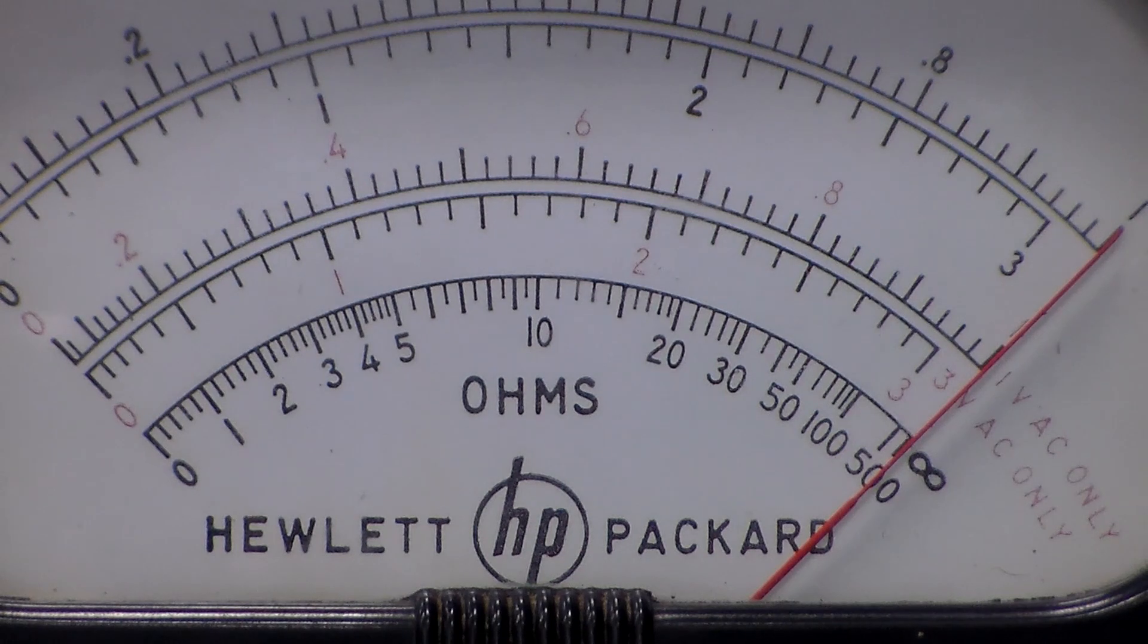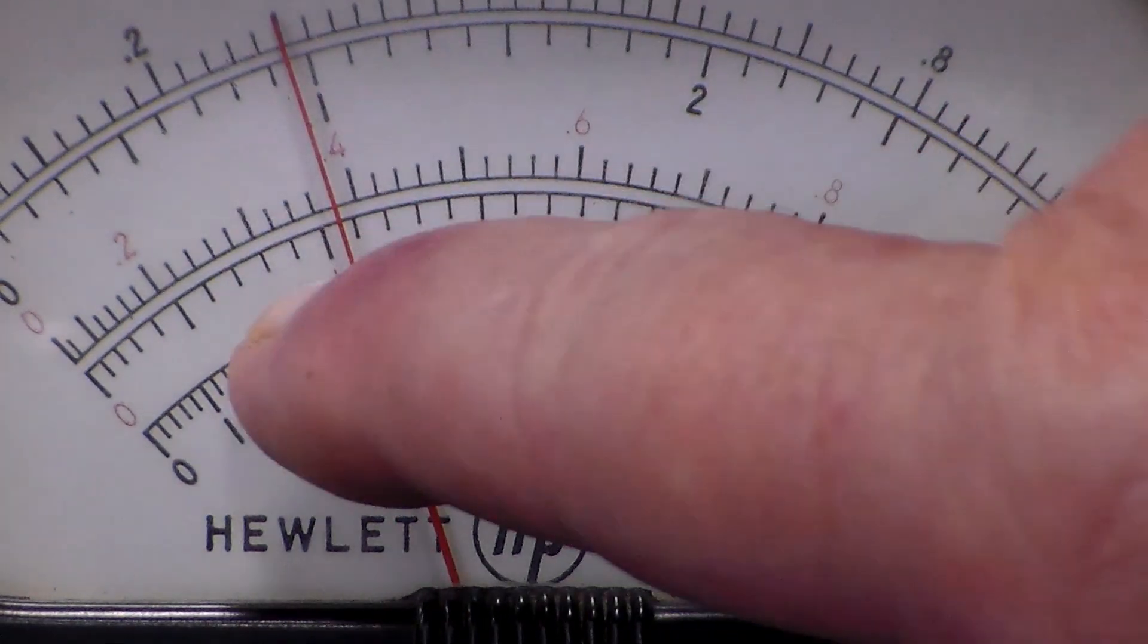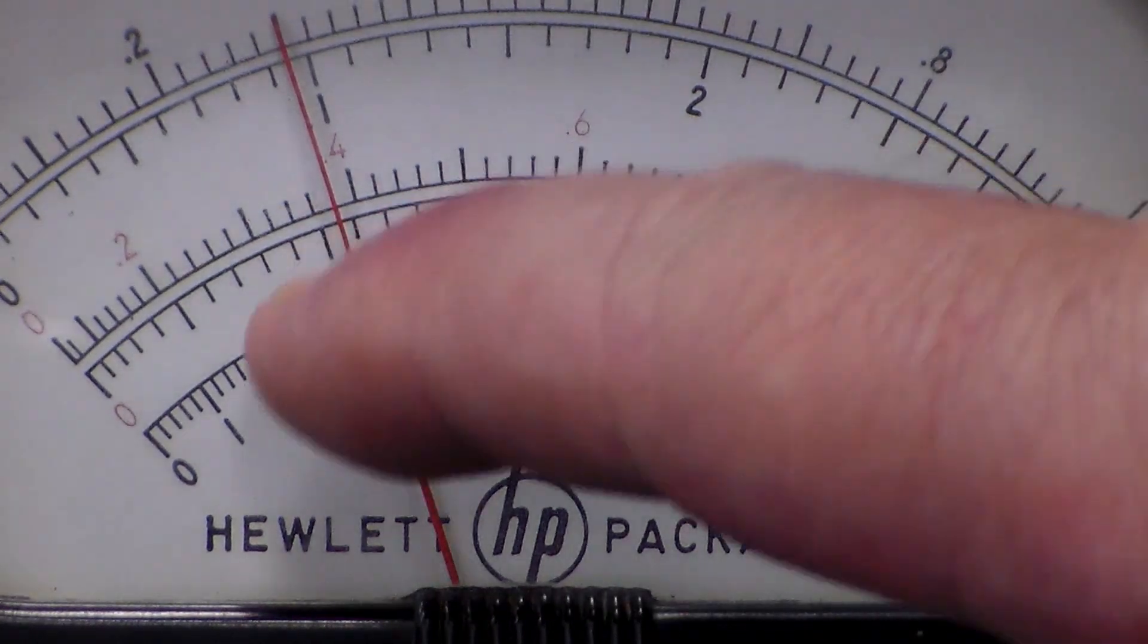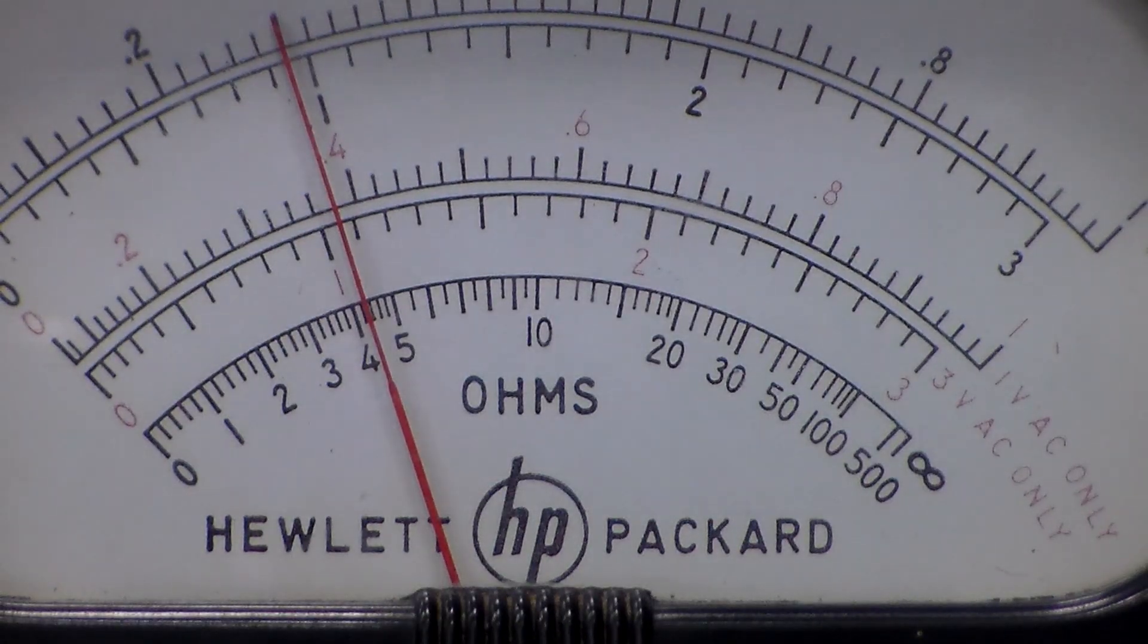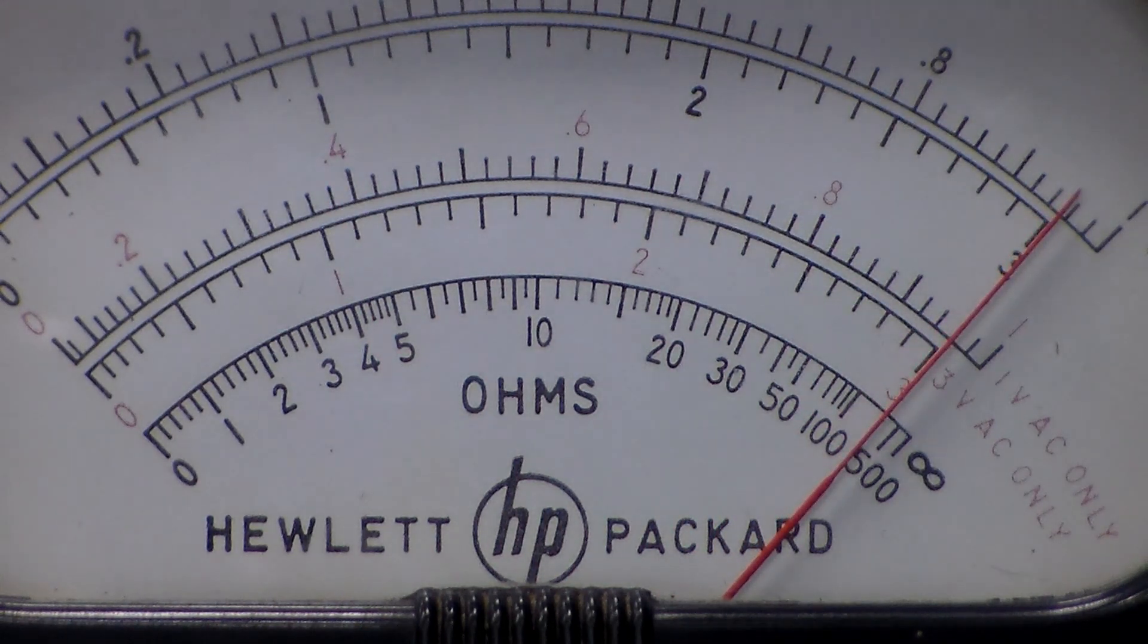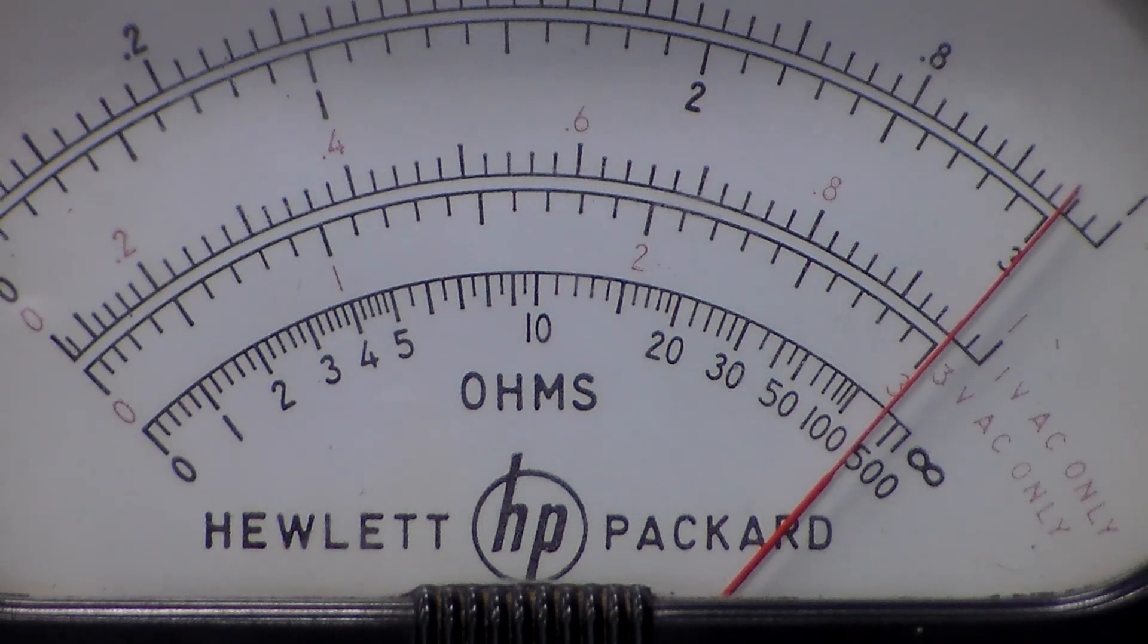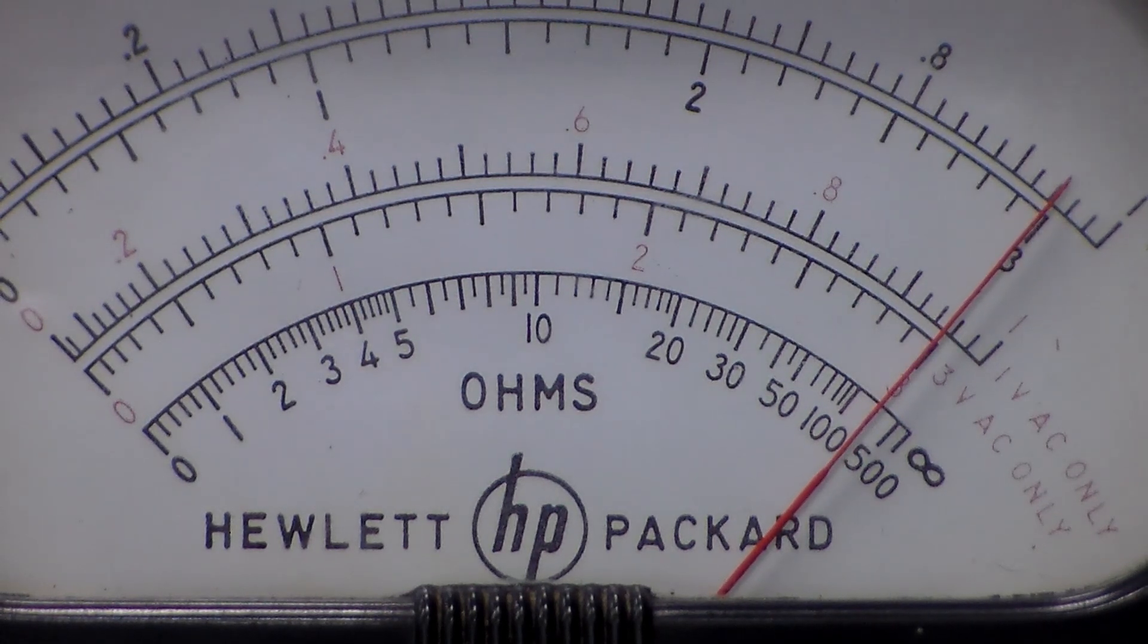1 volt here now is on this lower scale, this is the 3 volt AC range, and it's reading a little bit high. What we need to do first is set that to 3 volts. It is reading a fraction high there. We need to adjust the 3 volt gain setting pot, which is R39. We just bring that down a touch.